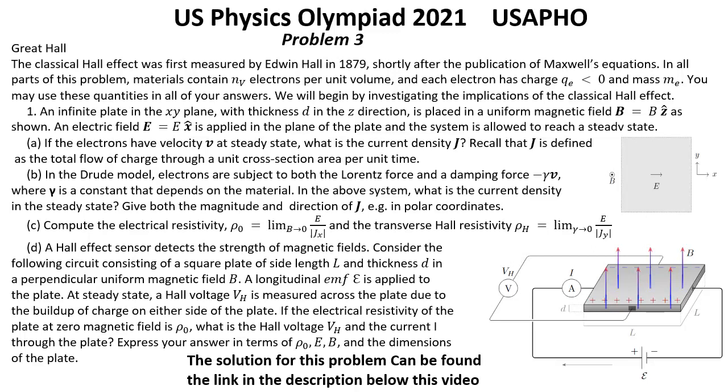Part 1: An infinite plate in the xy plane with thickness d in the z direction is placed in a uniform magnetic field B equals B multiplied by unit vector z as shown. An electric field E equals E multiplied by unit vector x is applied in the plane of the plate and the system is allowed to reach a steady state.